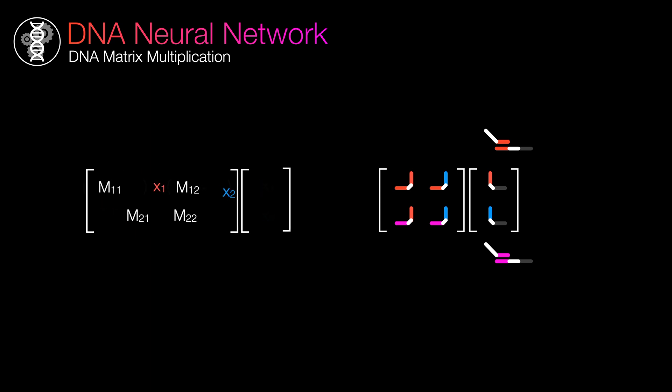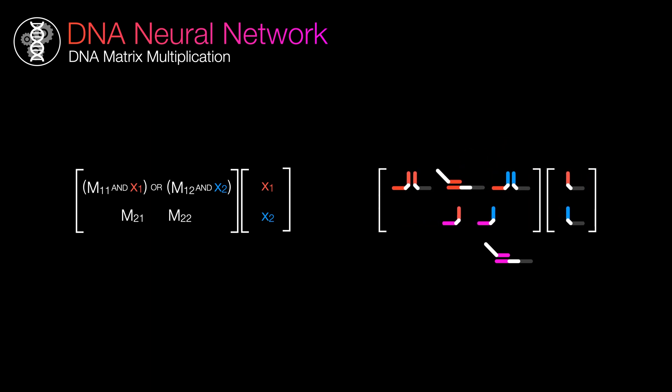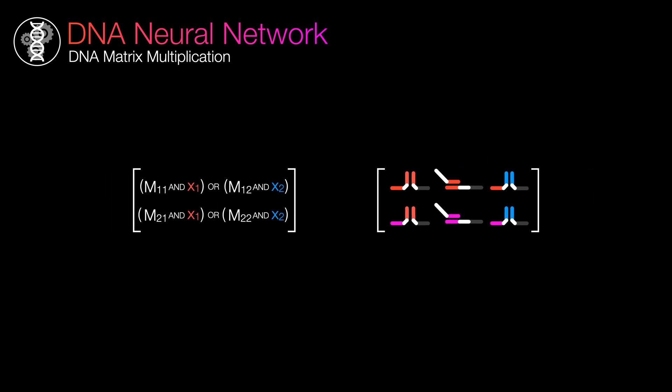Let's strip down matrix multiplication down to its essence. You multiply the row and the column element-wise and then sum them together. In Boolean terms, you AND these two pairs together and then OR the result. These DNA will pair up only if the connectors are complementary. This represents an AND operation. If either one of these pairs are actually paired, it can interact with this gate to push out an output. This is the OR operation.